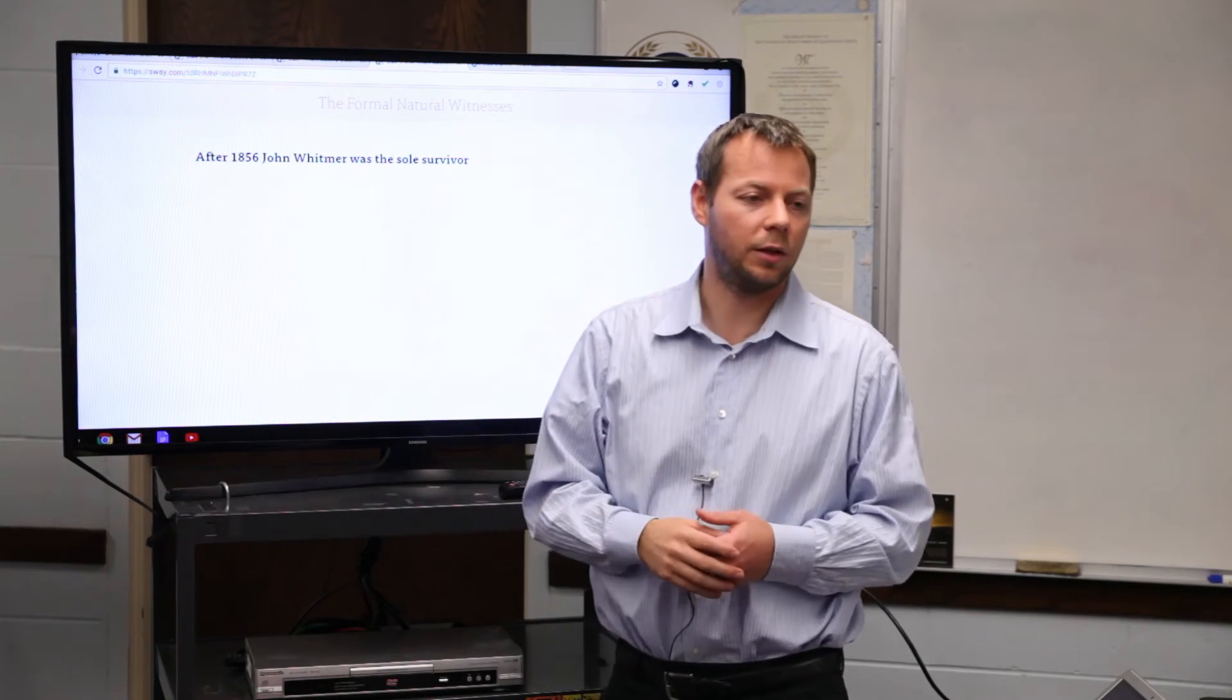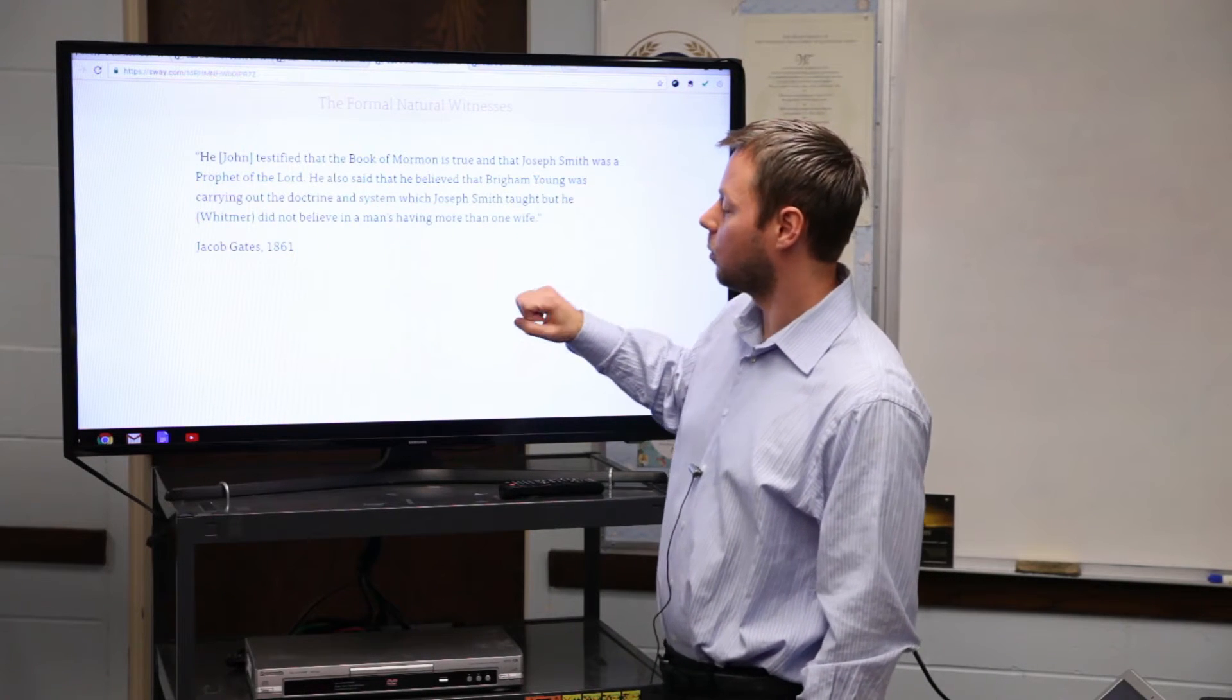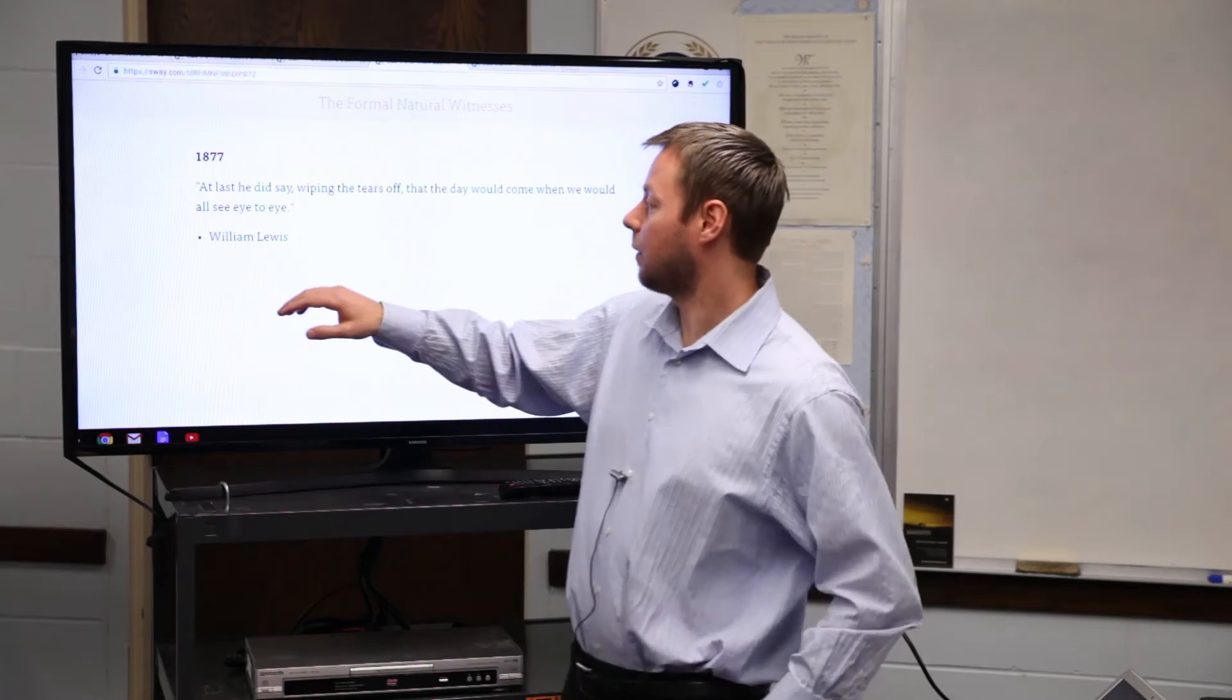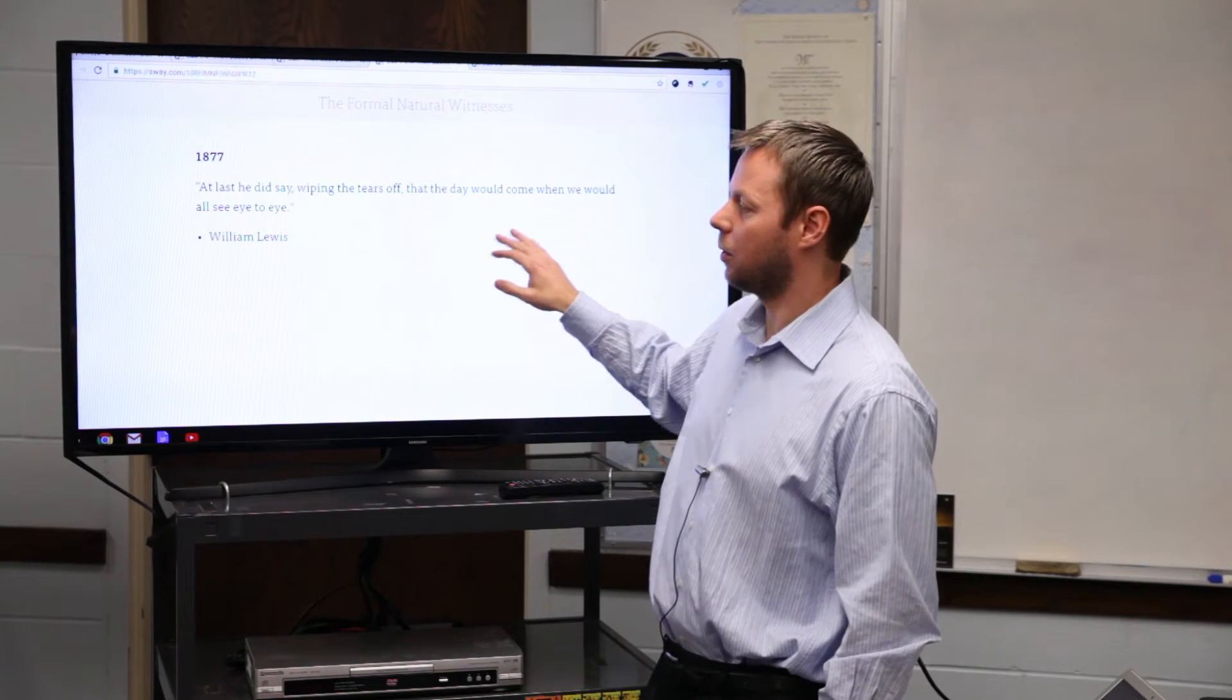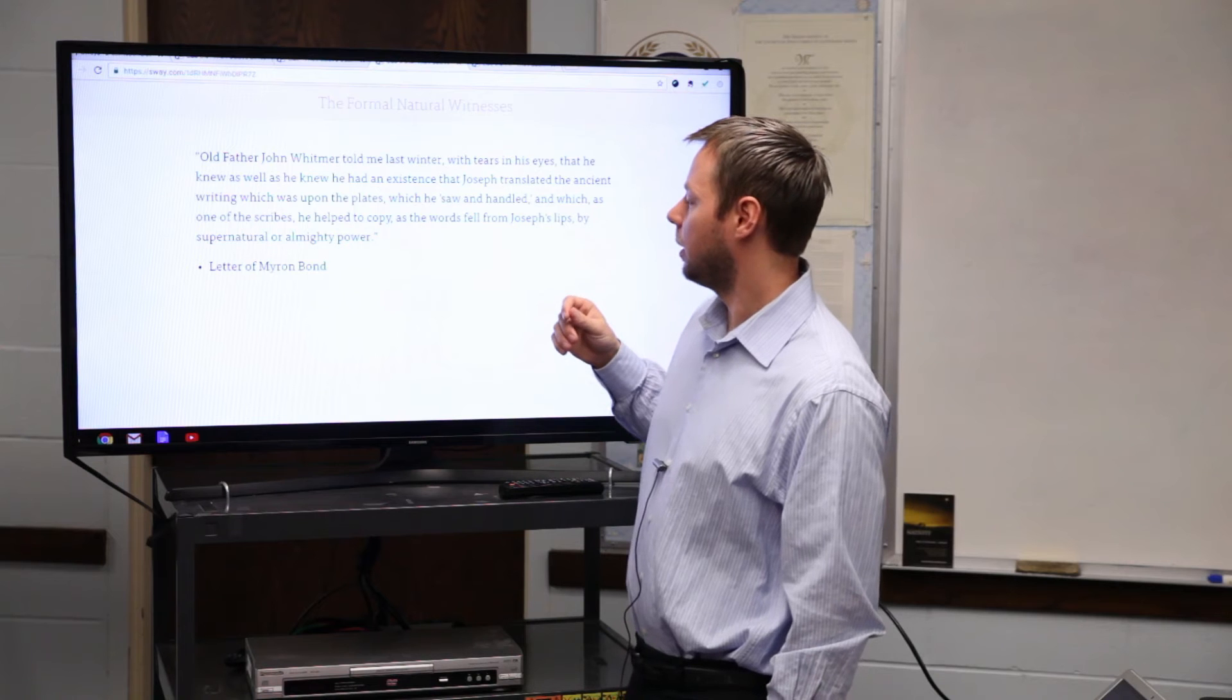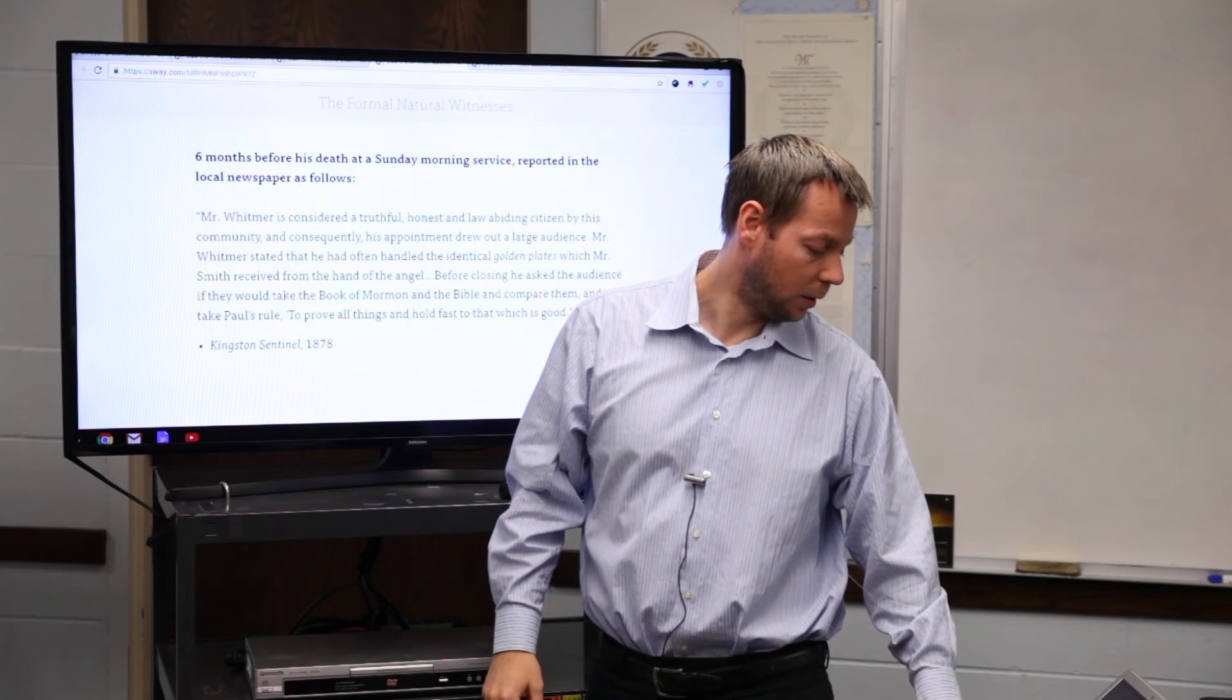So after 1856, John Whitmer's the sole survivor, so he outlives some people by decades. And he has a number of chances to reiterate his testimony. In 1861, Jacob Gates: John testified that the Book of Mormon is true, that Joseph Smith was a prophet of the Lord. To William Lewis in 1877, nearing the end of his life, he's a bit more reflective. At last, he did say, wiping the tears off, that the day would come when we would all see eye to eye. In a letter of Myron Bond: 'Old Father John Whitmer told me last winter with tears in his eyes that he knew as well as he knew he had an existence that Joseph translated the ancient writing which was upon the plates, which he saw and handled, in which, as one of the scribes, he helped to copy as the words fell from Joseph's lips by supernatural almighty power.'